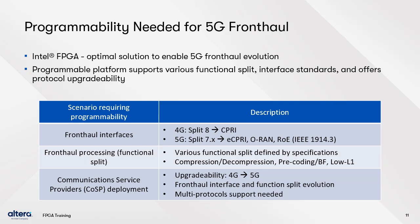Pairing this IP with a programmable fabric and highly configurable high-speed transceivers, the FPGA provides a unique platform that supports various functional splits, interface standards, and upgradability. The table on this slide highlights some of the RAN scenarios requiring programmability that benefit from the use of Altera FPGAs. For front-haul interfaces, 4G uses split 8 and the cPRE protocol, while 5G uses splits 7.2, 7.3, and 7.4, supported by eC-PRE, O-RAN, and radio over Ethernet, or ROE.